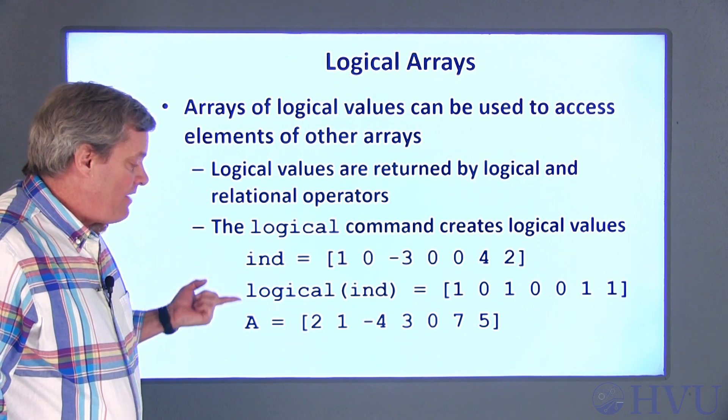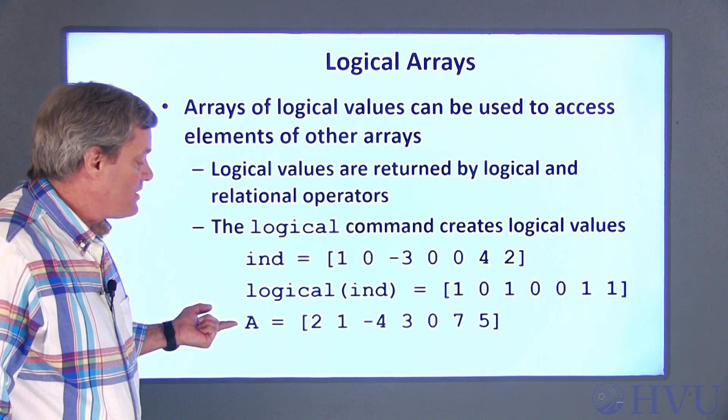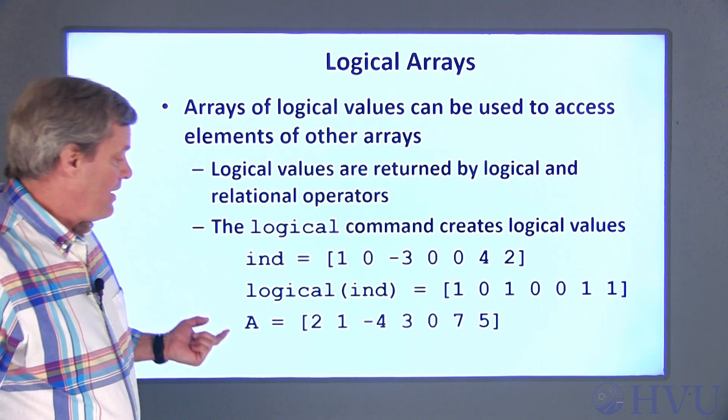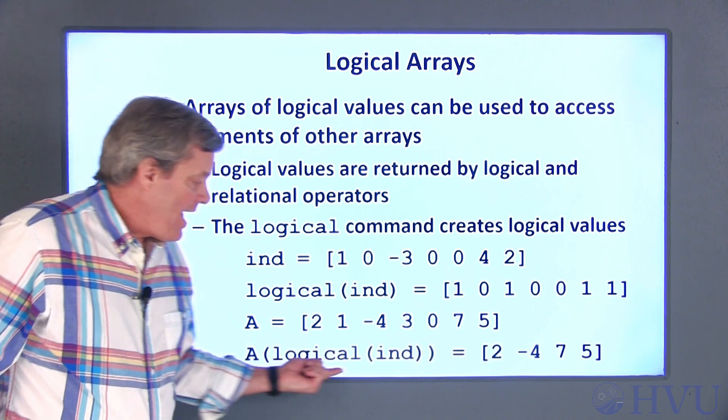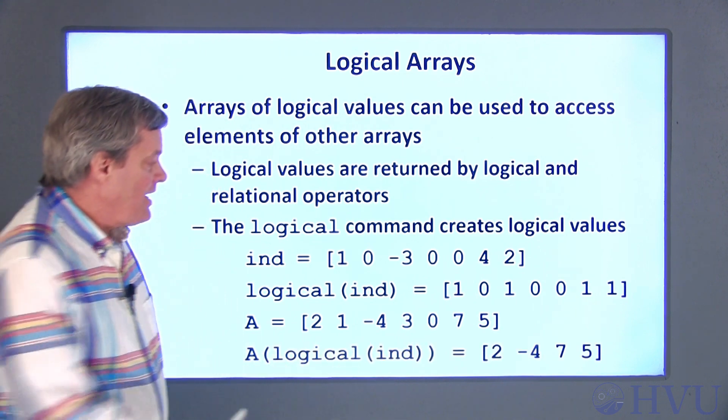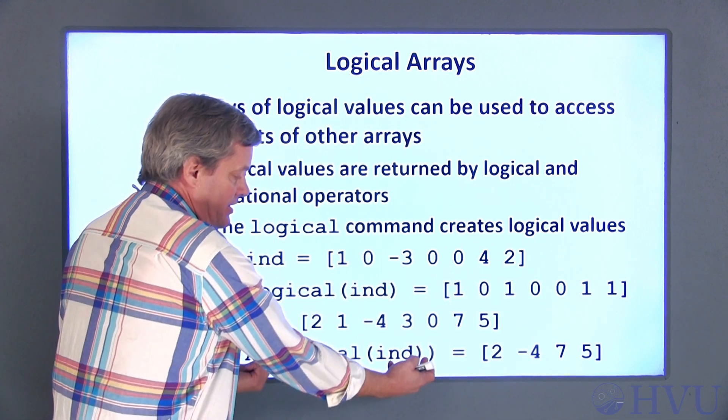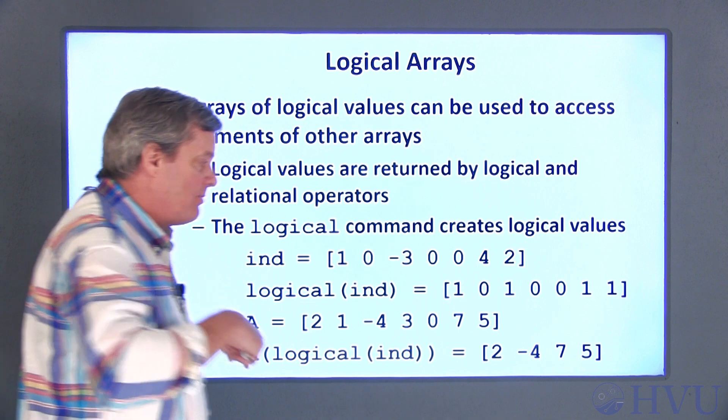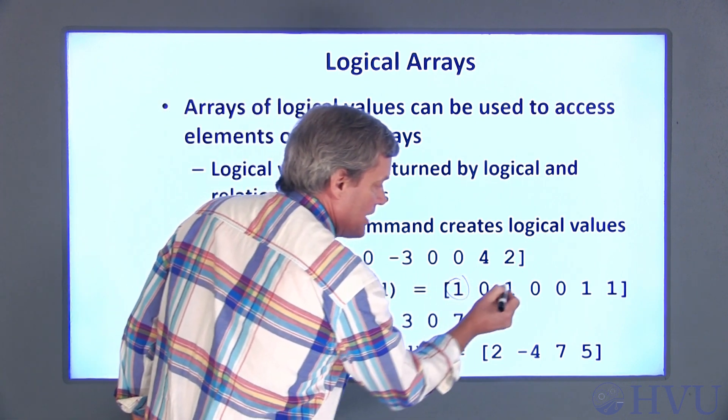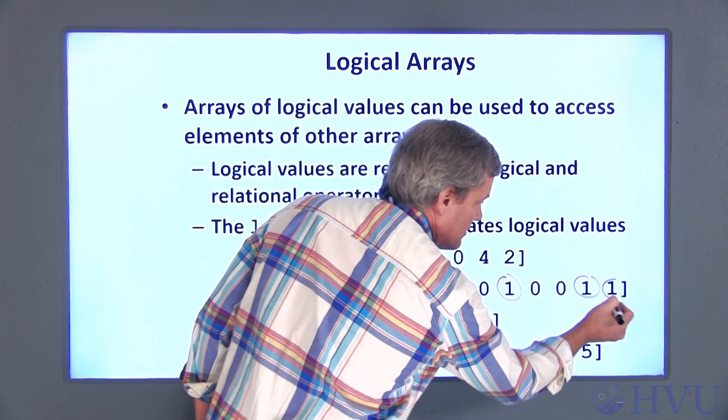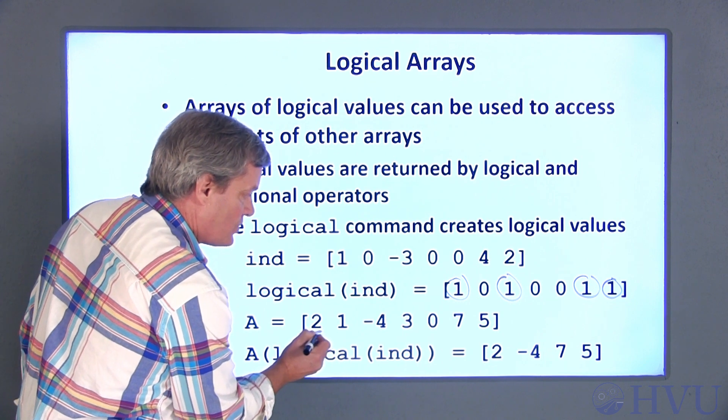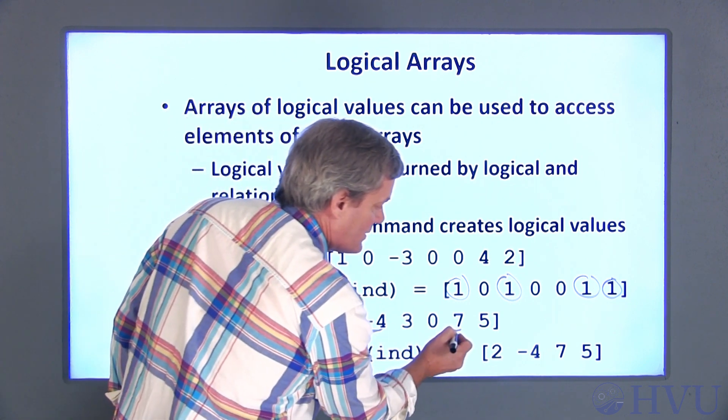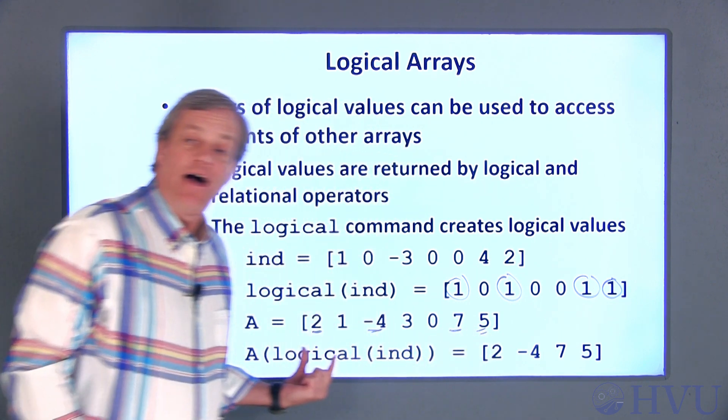Now let's take a look at using these values to access specific elements in this A array. If I say A of logical of IND, I'm taking this array and using it as an argument to A. It extracts any elements in A that correspond to logical 1s. So I get 2, negative 4, 7 and 5 out of this command.